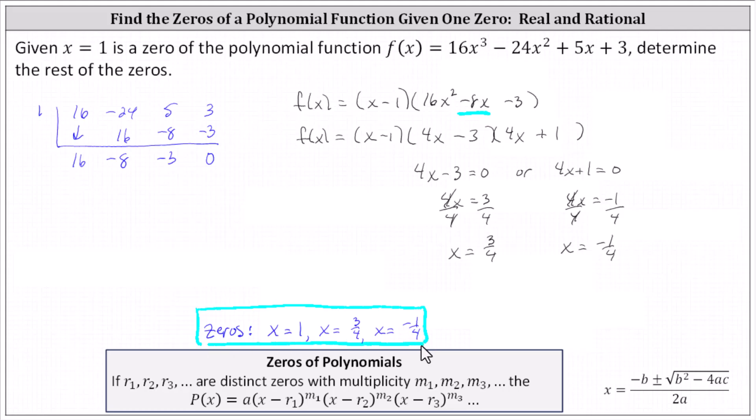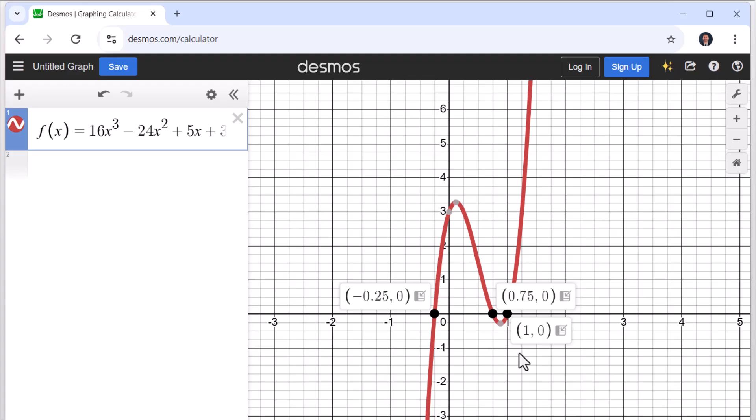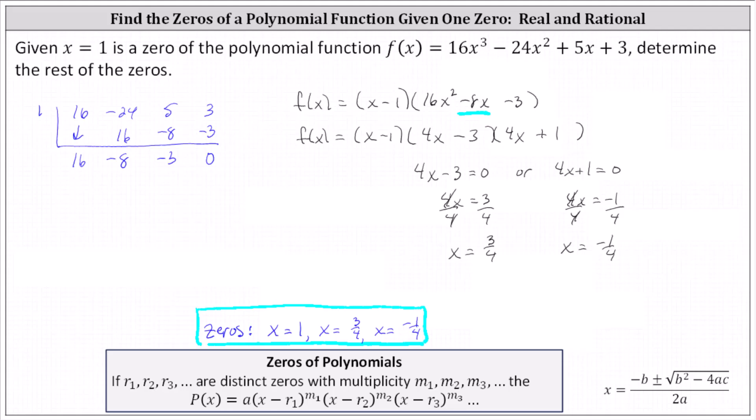Let's go back and verify these using the graph. Notice the x-intercepts are negative 0.25, or negative one fourth, 0.75, or three fourths, and one. These are the zeros of the given degree three polynomial function, verifying our work is correct. I hope you found this helpful.